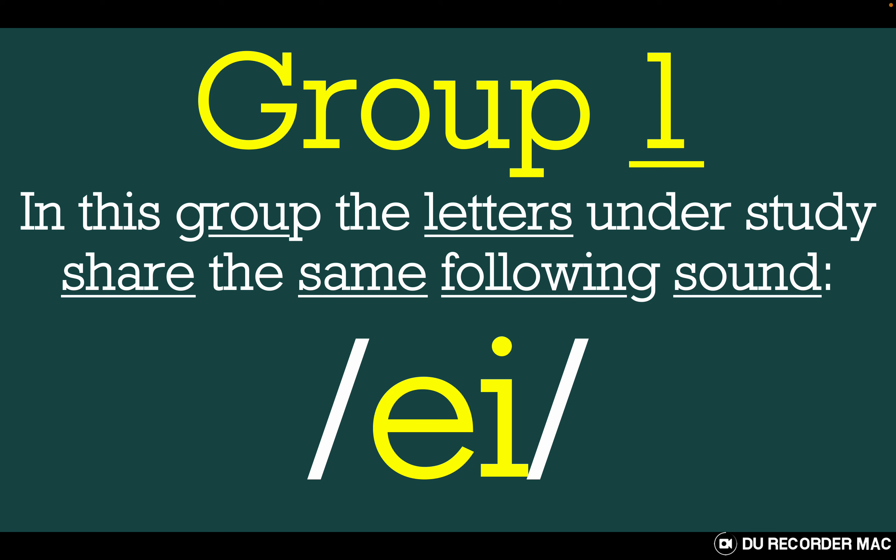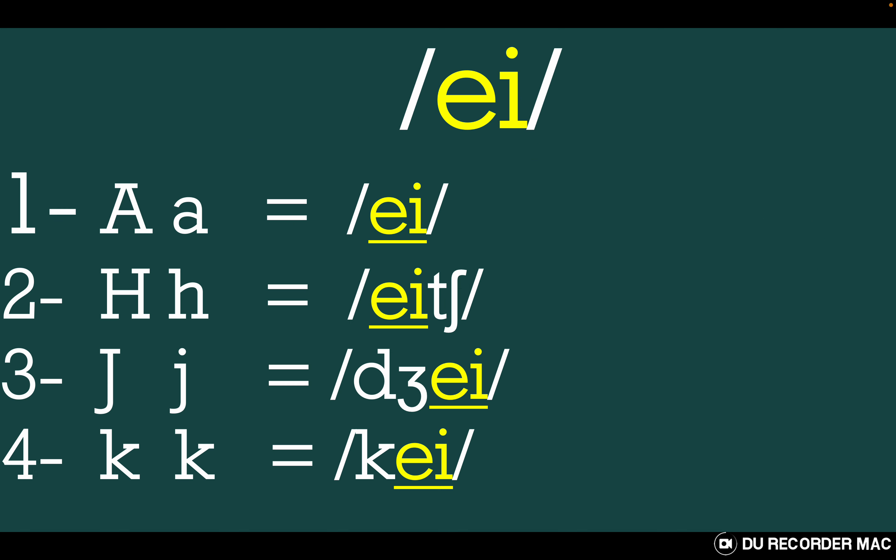Group one. In this group, the letters share the same sound, which is 'a'. The sound 'a' is made up of the letters A and I, and is pronounced as a combination: a, a, a. In this group we have four letters that have the sound 'a'.